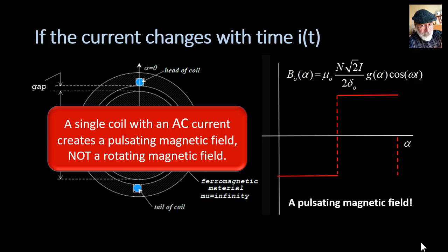When we have a single coil with an AC sinusoid current, we create a pulsating magnetic field, not a rotating magnetic field. And there is a strong difference, very important one.